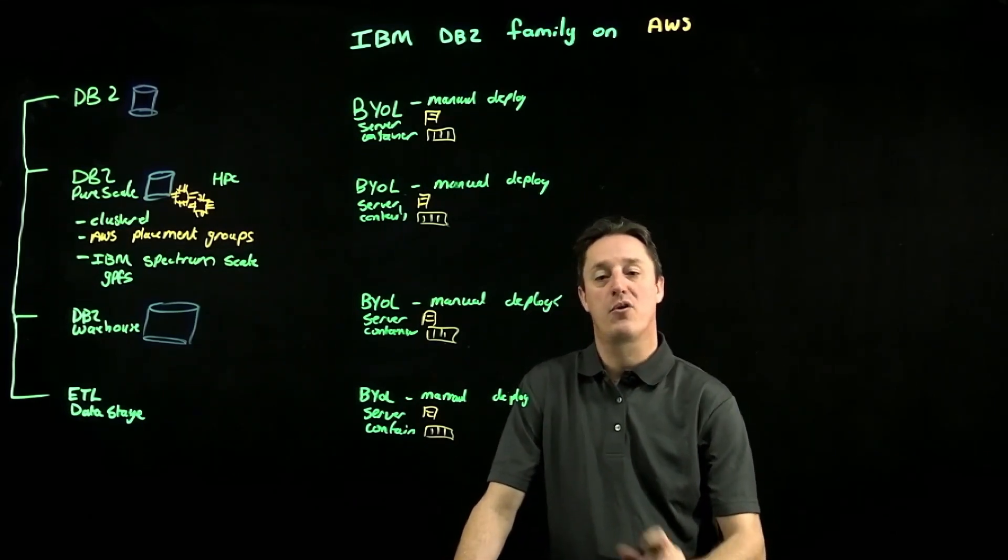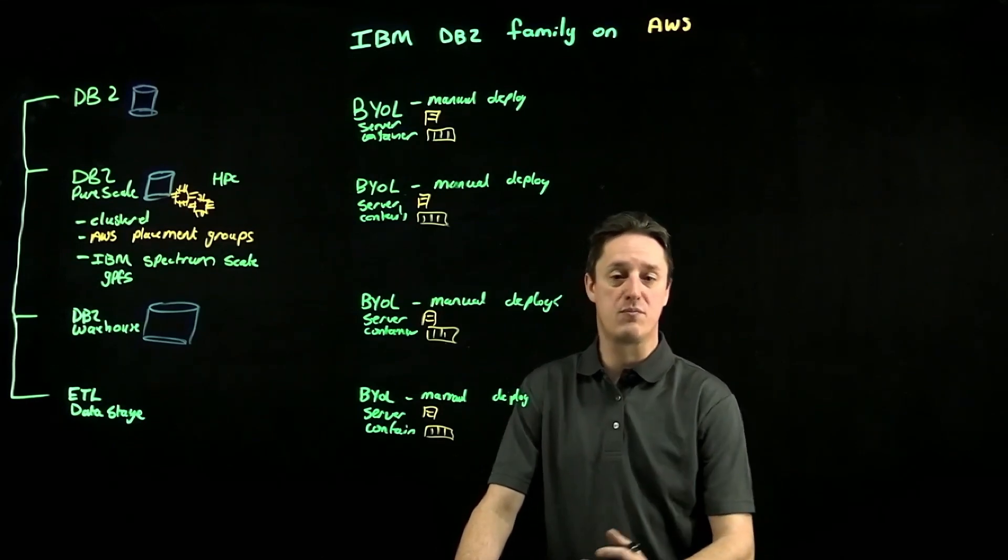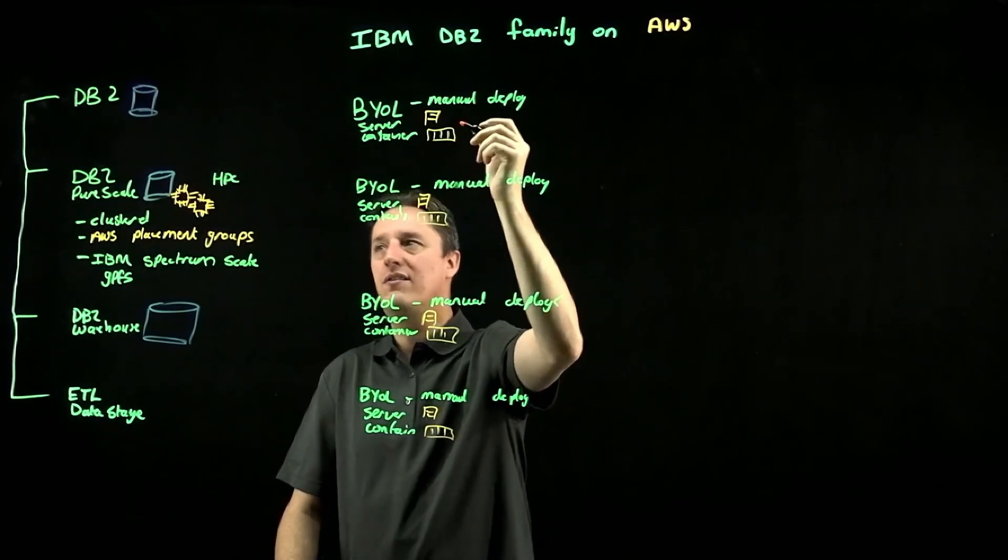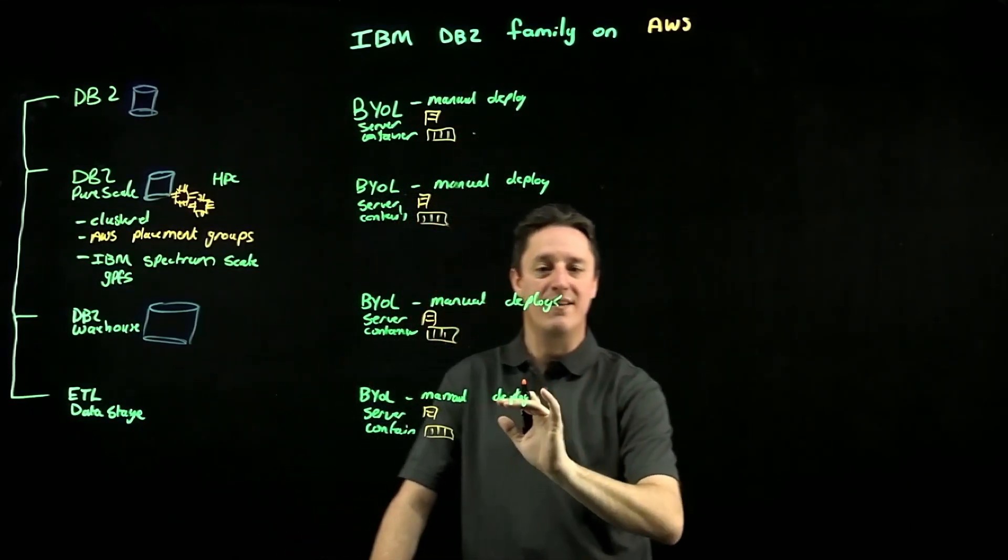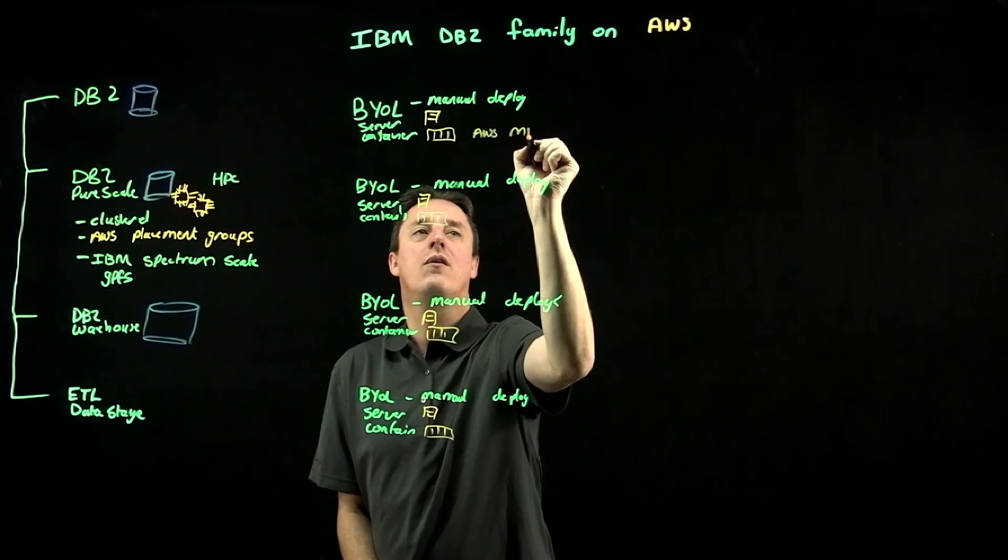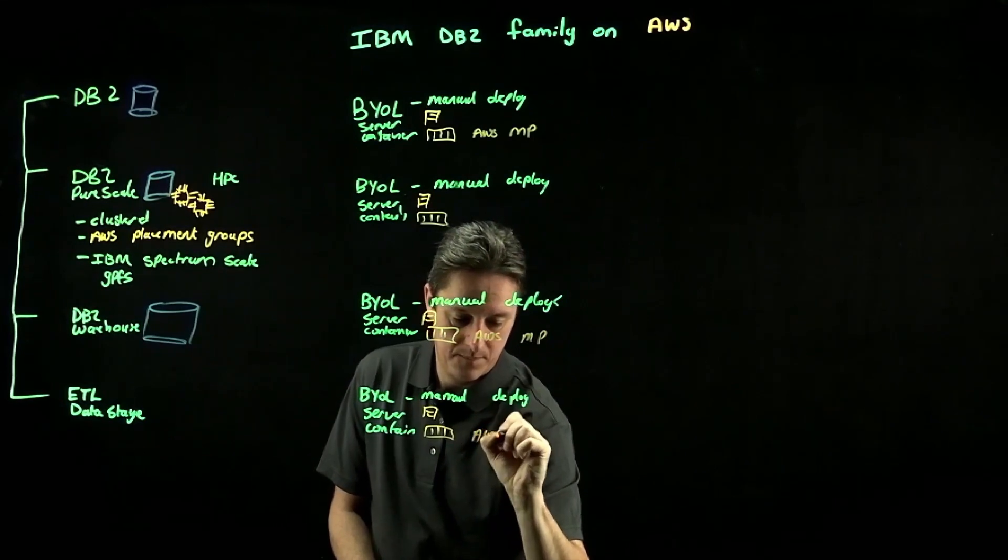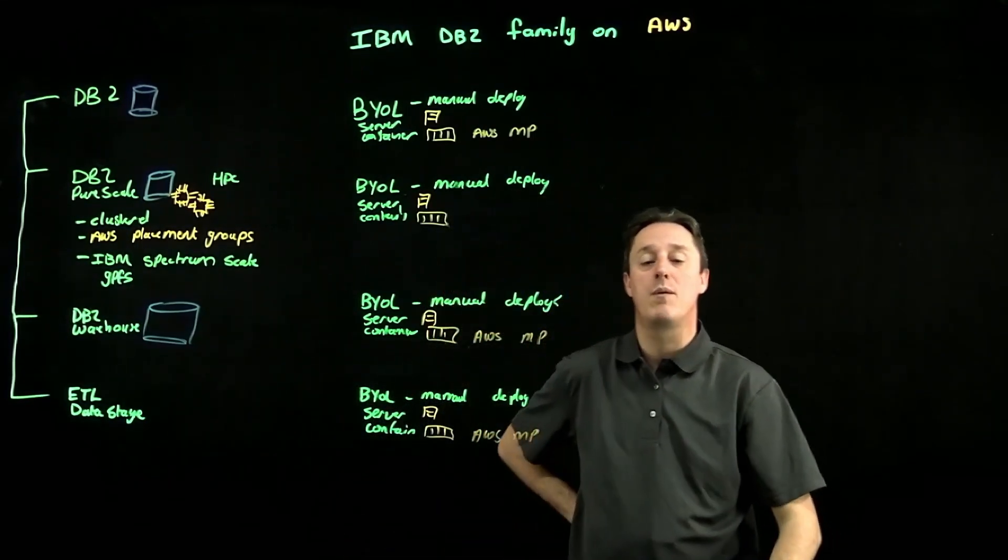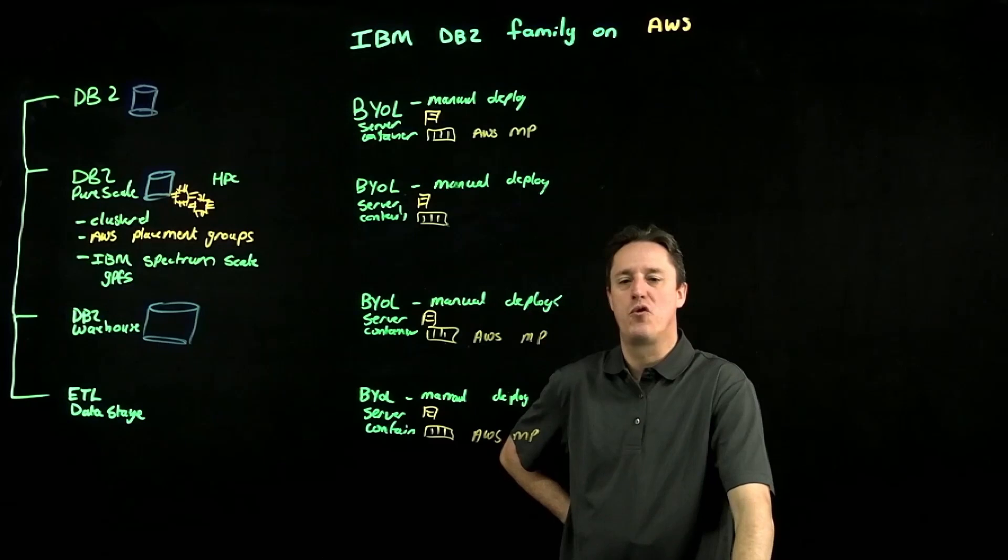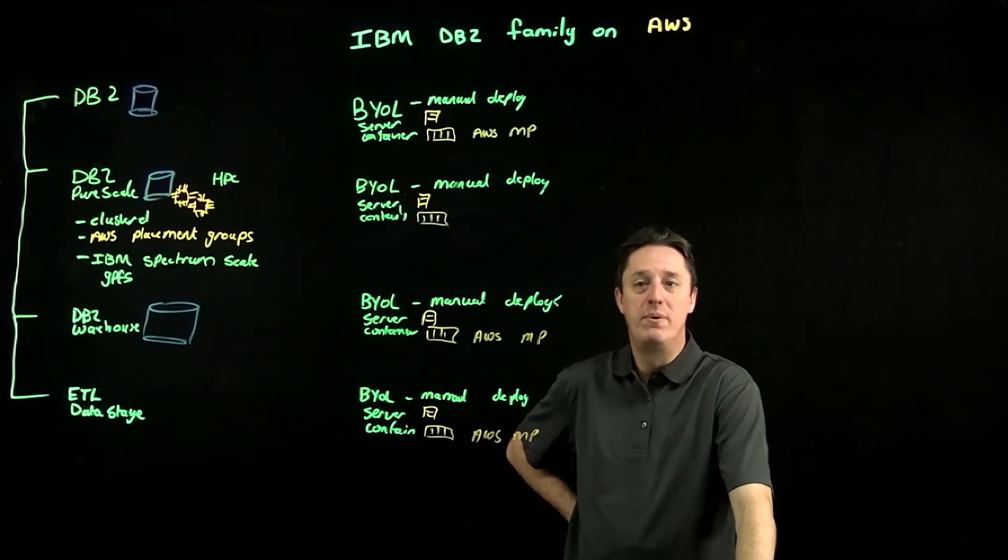Now, what's really fantastic about the container-based licensing models is they are able to be procured directly from AWS or the customer can go to IBM. So what you can do is you can get that container-based workload. In the case of DB2, in the case of DB2 Warehouse, and in the case of Data Stage, these are all available on AWS Marketplace. So customers can go directly to AWS Marketplace, subscribe to that product, and then they end up in a subscription for that product through AWS. This becomes an additional line item on their AWS billing.